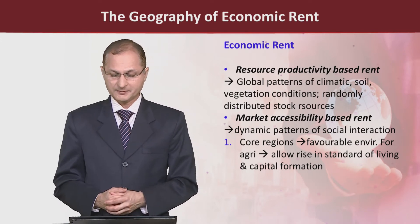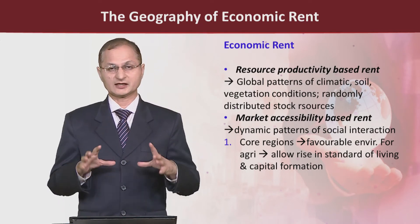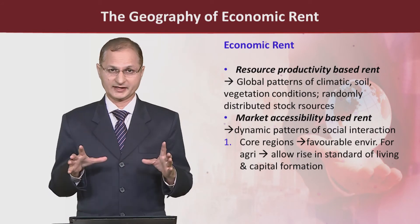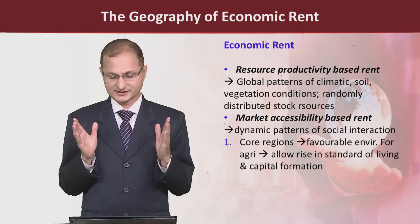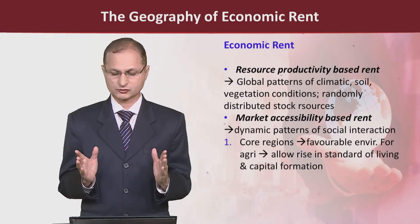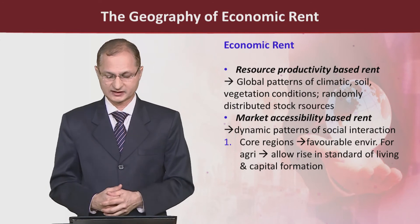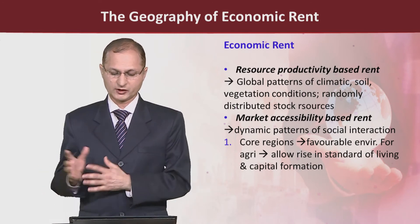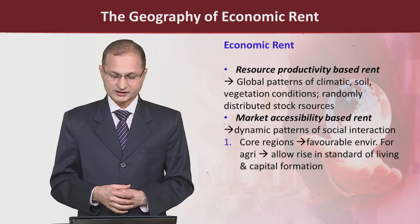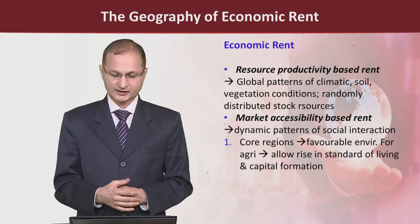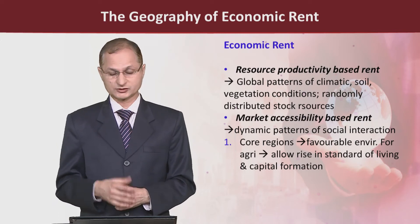The global pattern of climate, soil, and vegetation conditions are all important — they enhance the productivity of any resource. So resource-based rent can also be generated on the basis of climate, soil, and vegetation. On the other hand, market accessibility based rent is generated, where the dynamic pattern of social interaction plays a role.